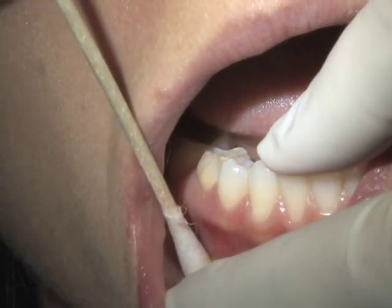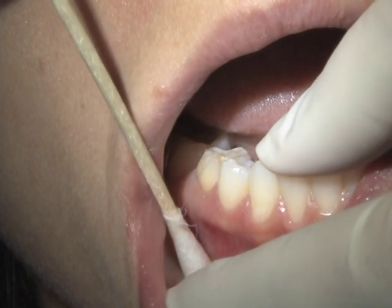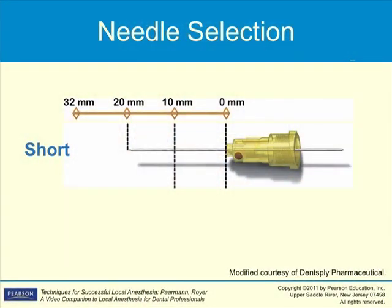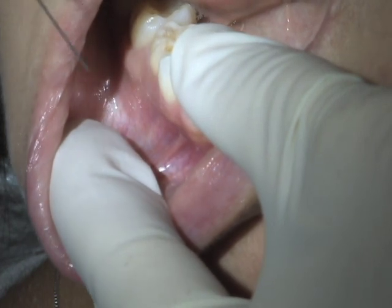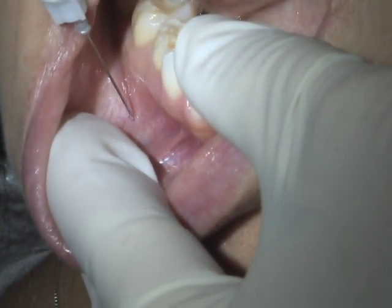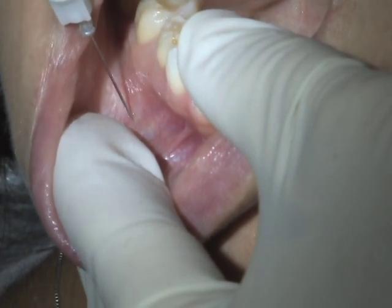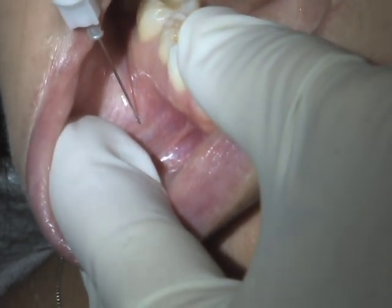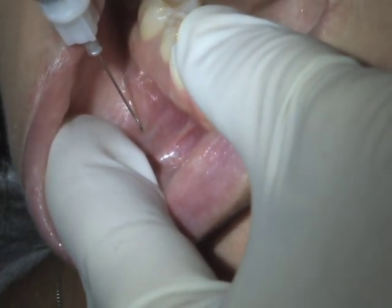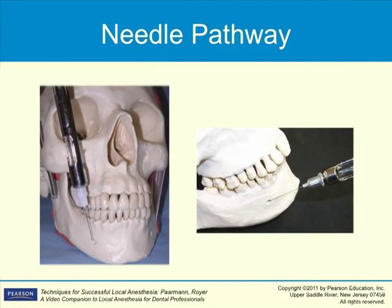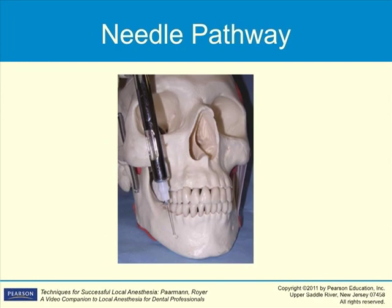Place topical anesthetic for one to two minutes over the mental foramen. A 25 or 27 gauge short needle is used for either of these injections. Retract the lower lip and buccal soft tissues laterally to locate the penetration site. The bevel of the needle faces the bone and tissue is pulled taut. The penetration site is slightly anterior and superior to the mental foramen.